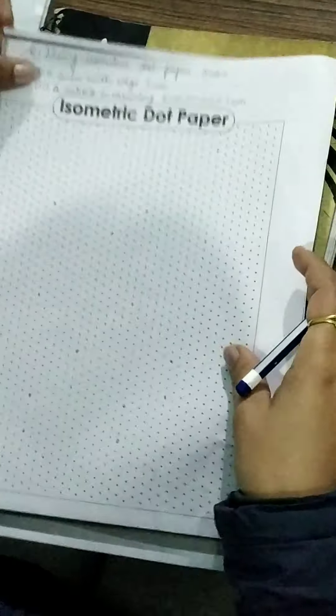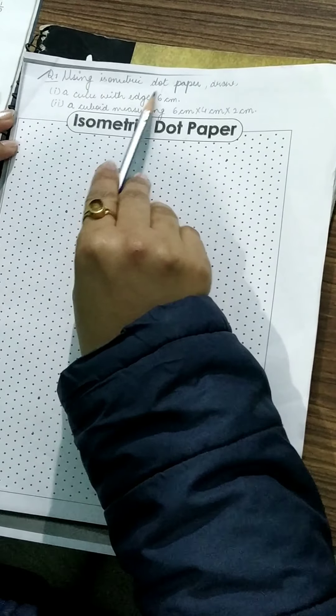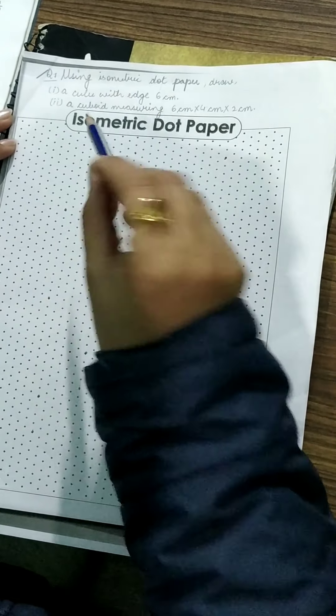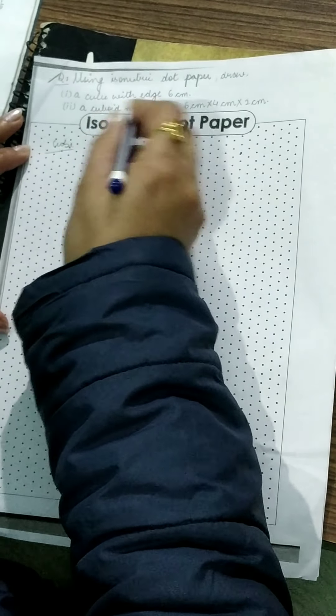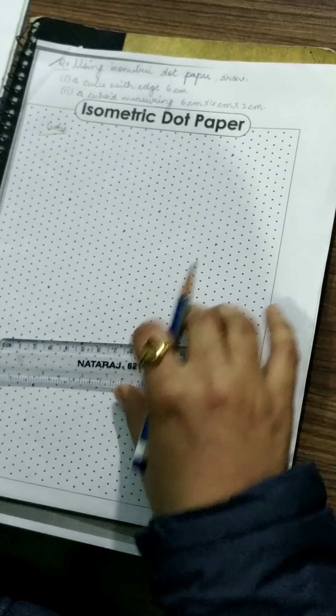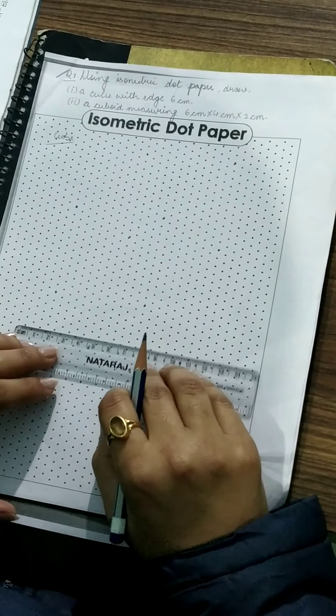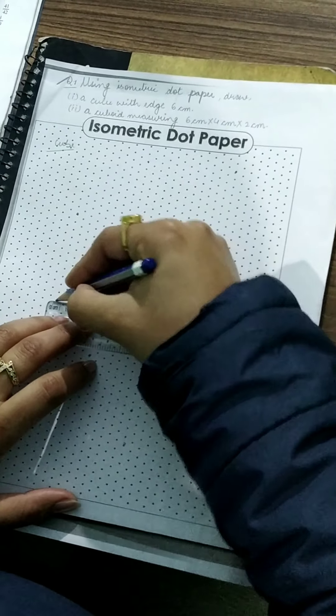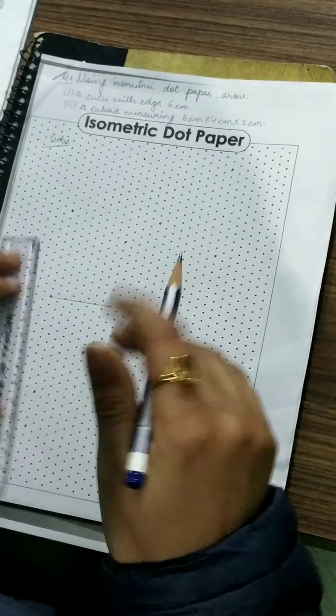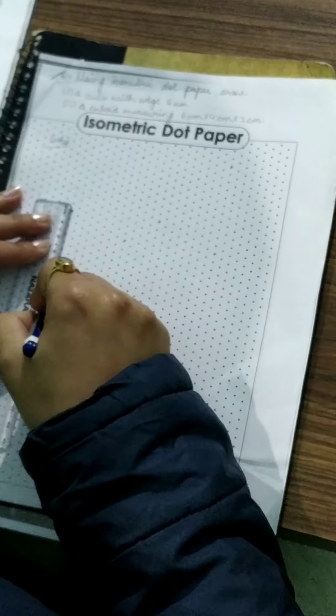Now children, 7th question. For 7th question 2 parts are there. Using isometric dot paper draw a cube with edge 6 cm. First part is this. So first of all we will draw a cube with edge 6 cm. Edge means all the sides should be equal to 6 cm. First of all a square.